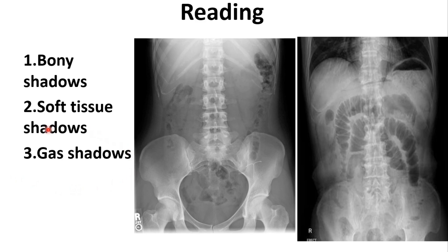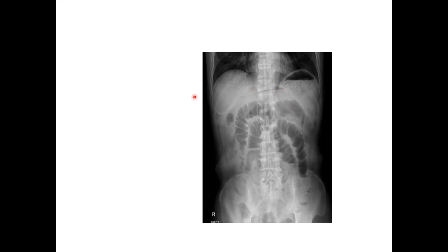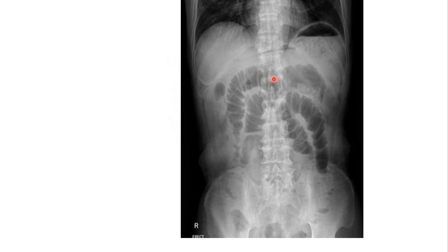The last shadow type is gas shadow. The first gas shadow you can see is under the left dome of the diaphragm — this is the fundus of the stomach, which we have already seen in the X-ray of the thoracic cage. Another type is scattered gas shadows seen in the intestine, often intermixed with fecal material and therefore interrupted. You can see intestinal gas shadows in both the abdominal and pelvic cavities. In another X-ray, the gas shadow in the small intestine forms a uniform pattern known as the step ladder pattern, seen in intestinal obstruction.